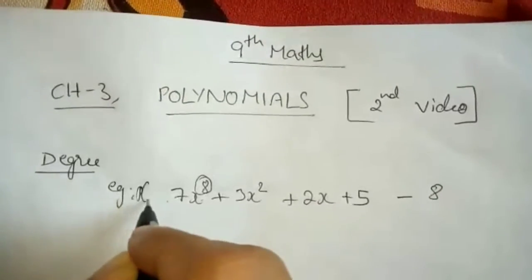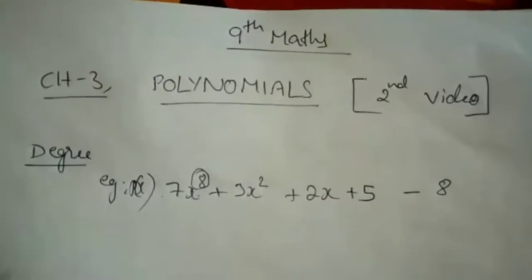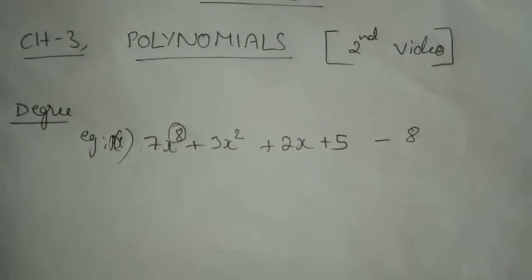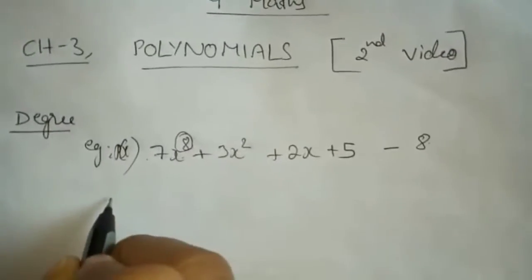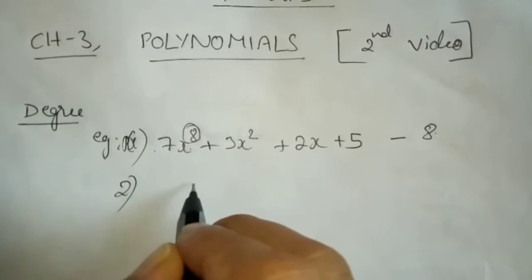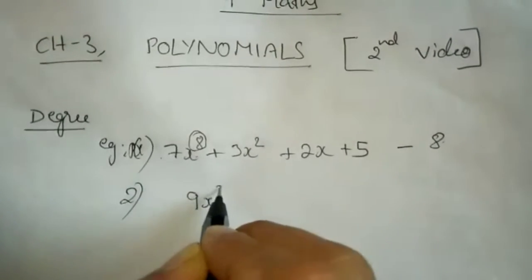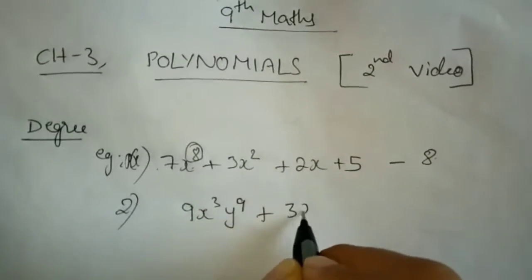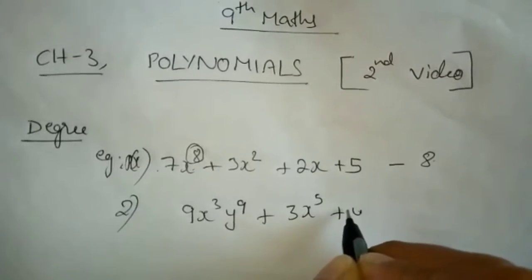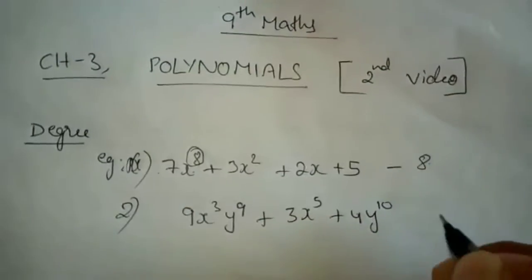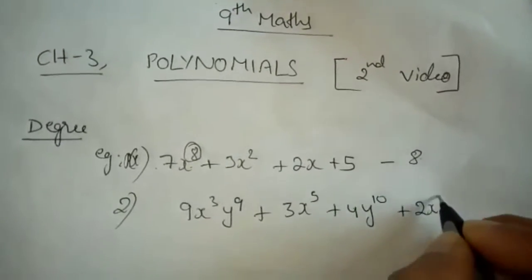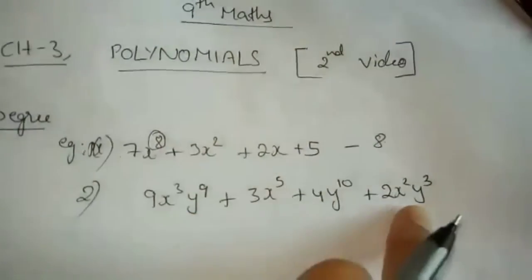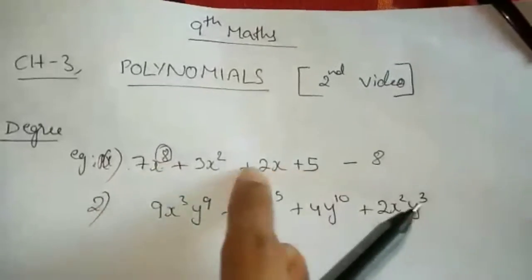So, degree of this polynomial will be 8. This is a polynomial in one variable. Now I will give one more example. This is a polynomial in two variables — you have two variables, X and Y. Here, the previous one had only X, so 8 is the degree because the highest power is 8.